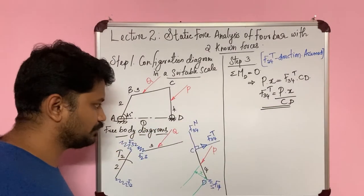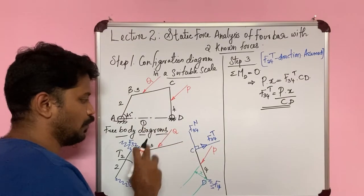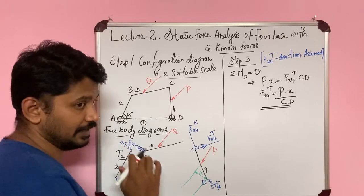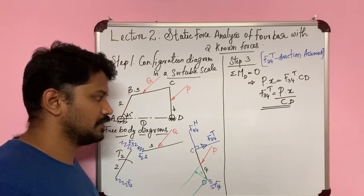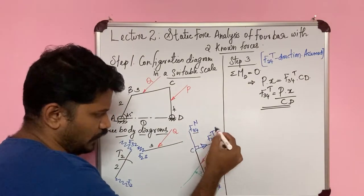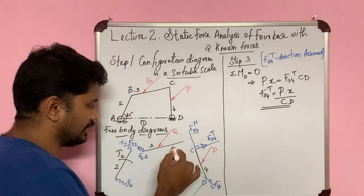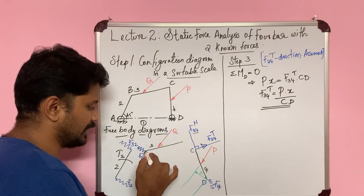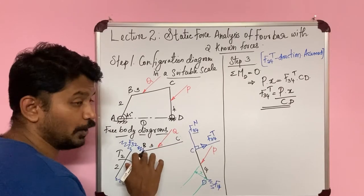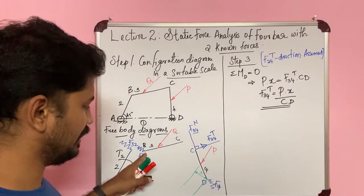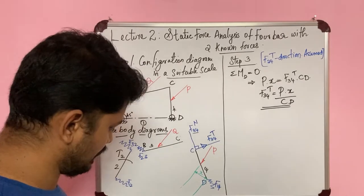Now I have found F34T but I still need to find F34N. To do so, I take moment with respect to point B. This is similar to the way we found F34T. With respect to point B, I will calculate and find the value of F43N as well.